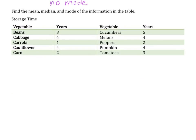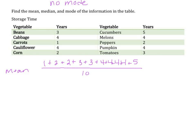Find the mean, median, and mode from the information in the table — storage time of vegetables in years. Since I know I'll have to order them anyway, I'll set them into order: one 1, two 2s, two 3s, four 4s, and one 5. To find the mean, add all these together and divide by 10, giving 32 divided by 10, so 3.2 is the average number of years for storage time.